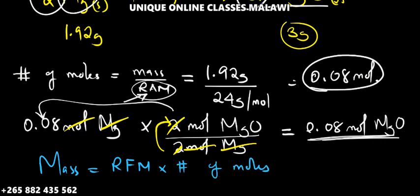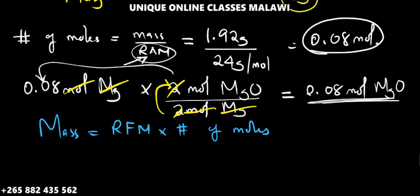So the RAM of magnesium oxide: magnesium's atomic mass is 24, plus oxygen's atomic mass, 1 times 16. So we have 24 plus 16, which is 40 grams per mole.